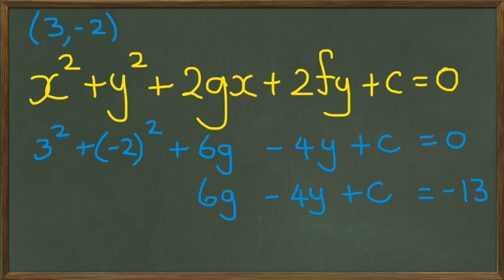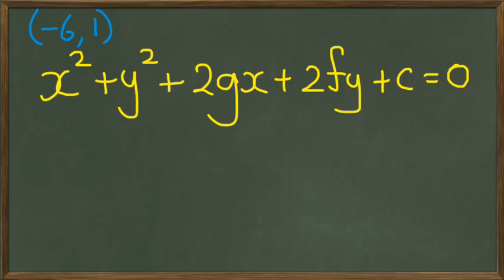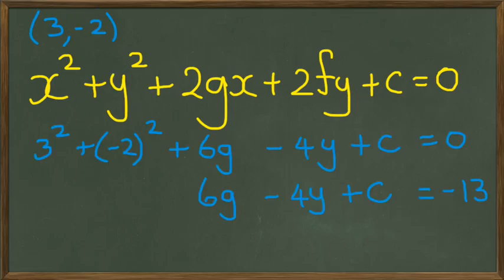I'm going to use my third point to create the third equation. The third point was negative 6, negative 6 and 1. I just realized that I made a mistake in the previous one. This right here should have been not y, but f.